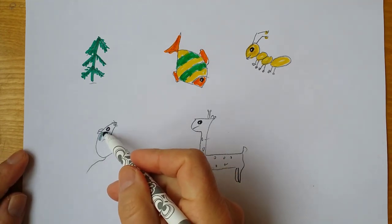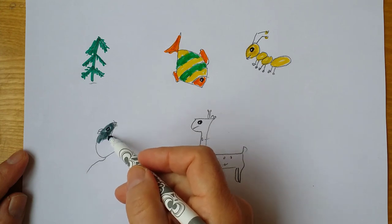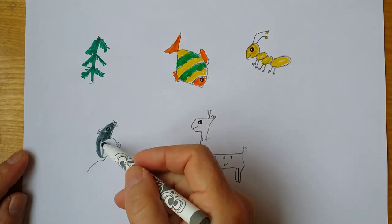Draw the mouse in gray. Mice come in different colors, therefore you can also paint them in different colors.